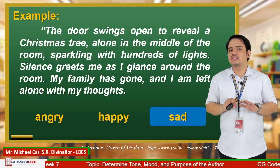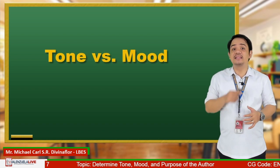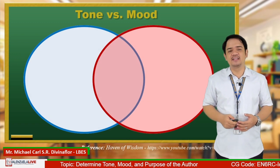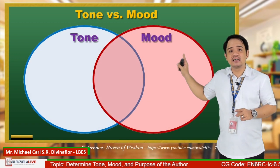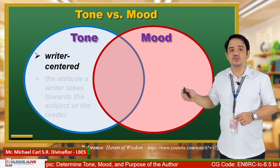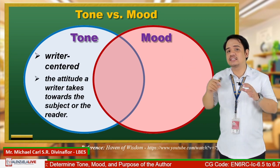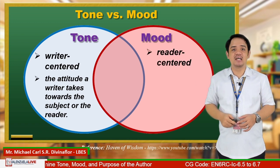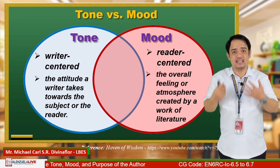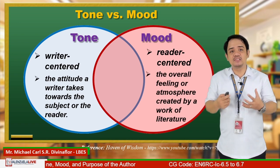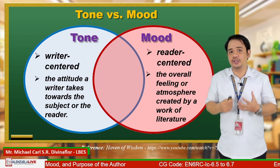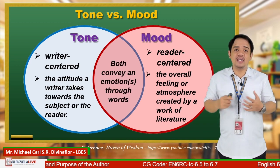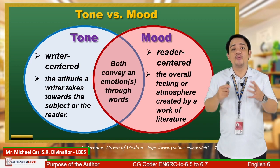Now, let us talk about the difference between tone and mood. The tone is writer-centered — it is the attitude a writer takes towards the subject or the reader. The mood, on the other hand, is reader-centered. It is influenced by the setting and is the overall feeling or atmosphere created by a work of literature. What we need to remember is that both of them convey an emotion or emotions through words.